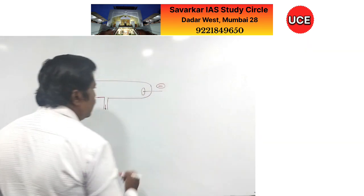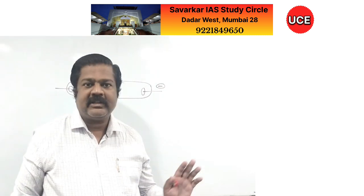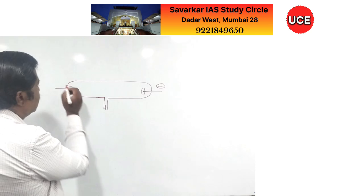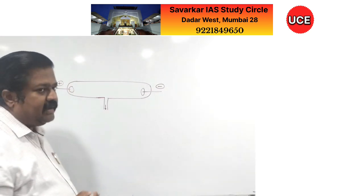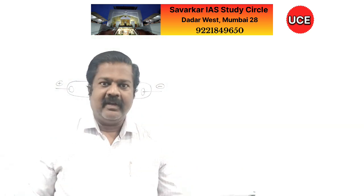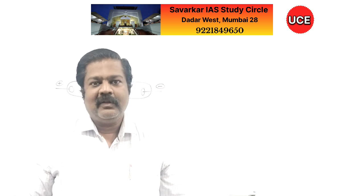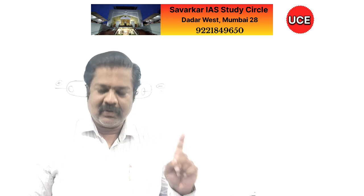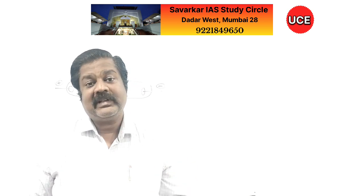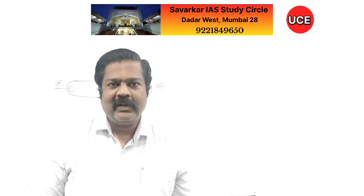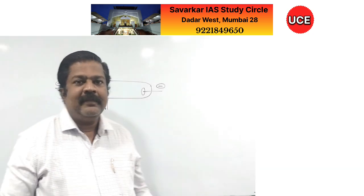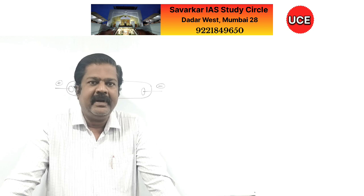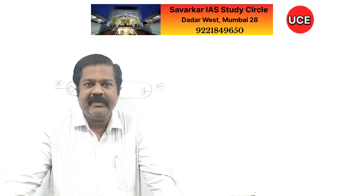Let us consider one side as cathode. Cathode in this experiment is the negative electrode, and the other side is the positive electrode or anode. Because in electrochemistry we sometimes consider anode as negative and cathode as positive, I am telling you that negative is not always cathode. But in this experiment, negative is cathode and positive is anode.